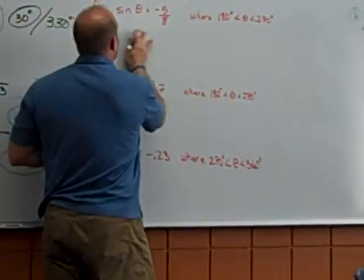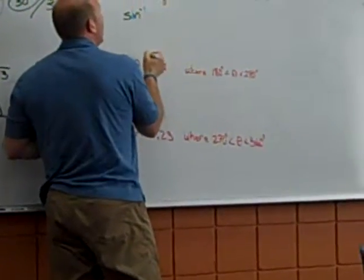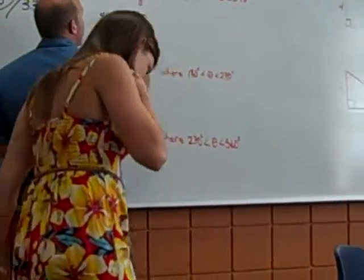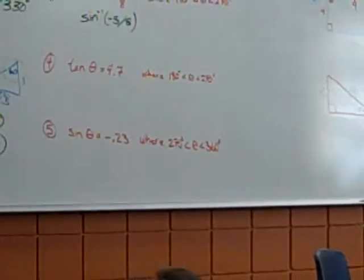So hit second. This is what it looks like on your screen. Sine inverse, put a parenthesis, negative 5 divided by 8. Type that in. See what you get.